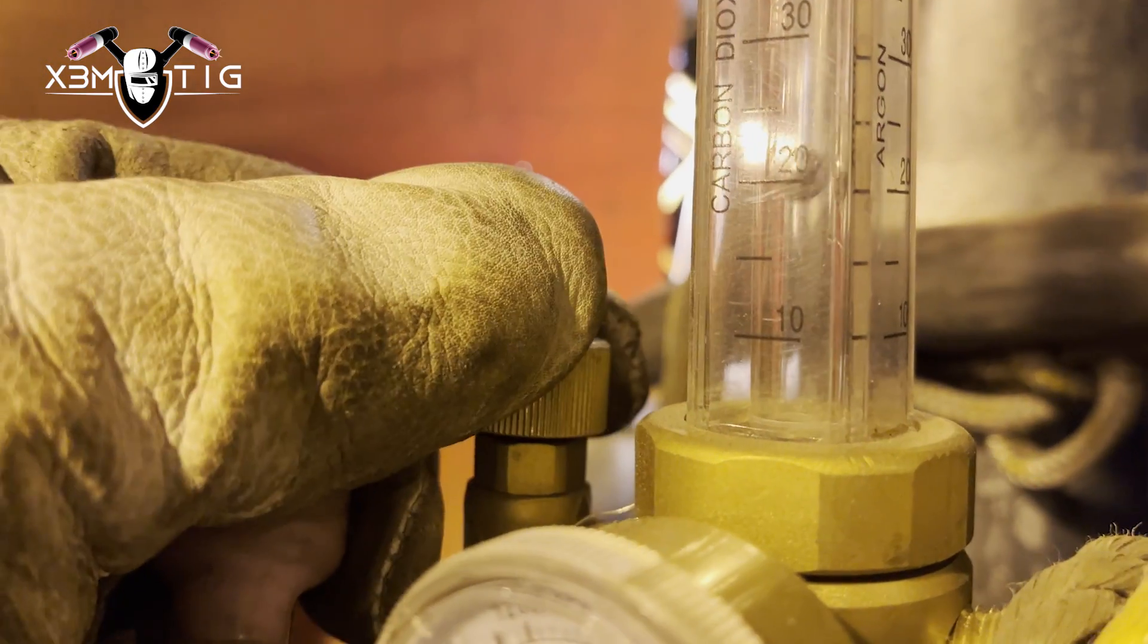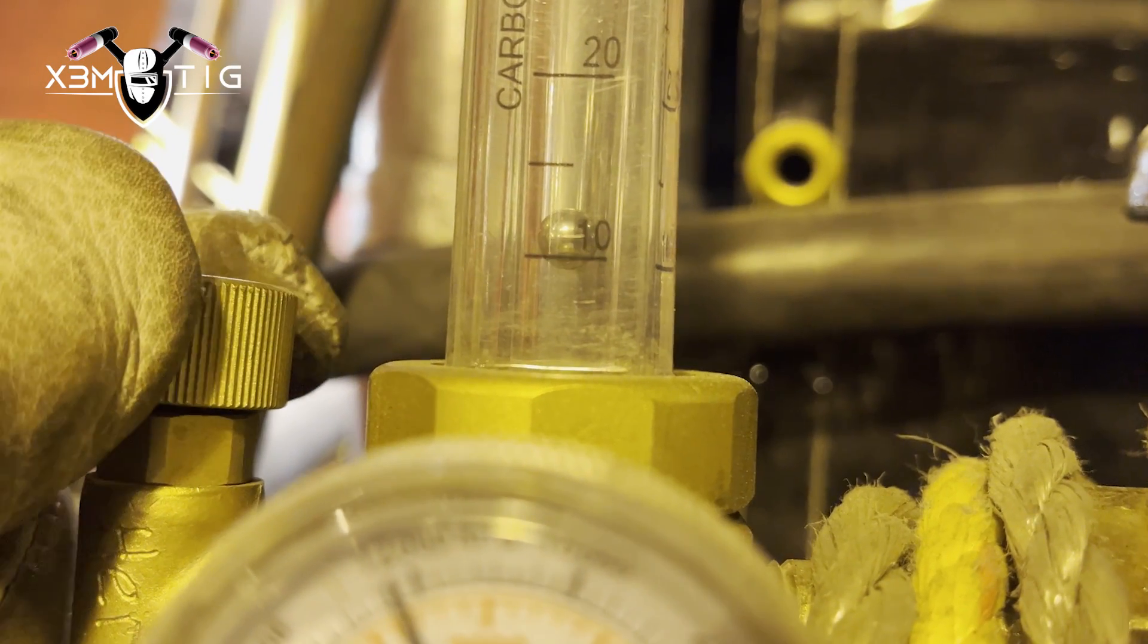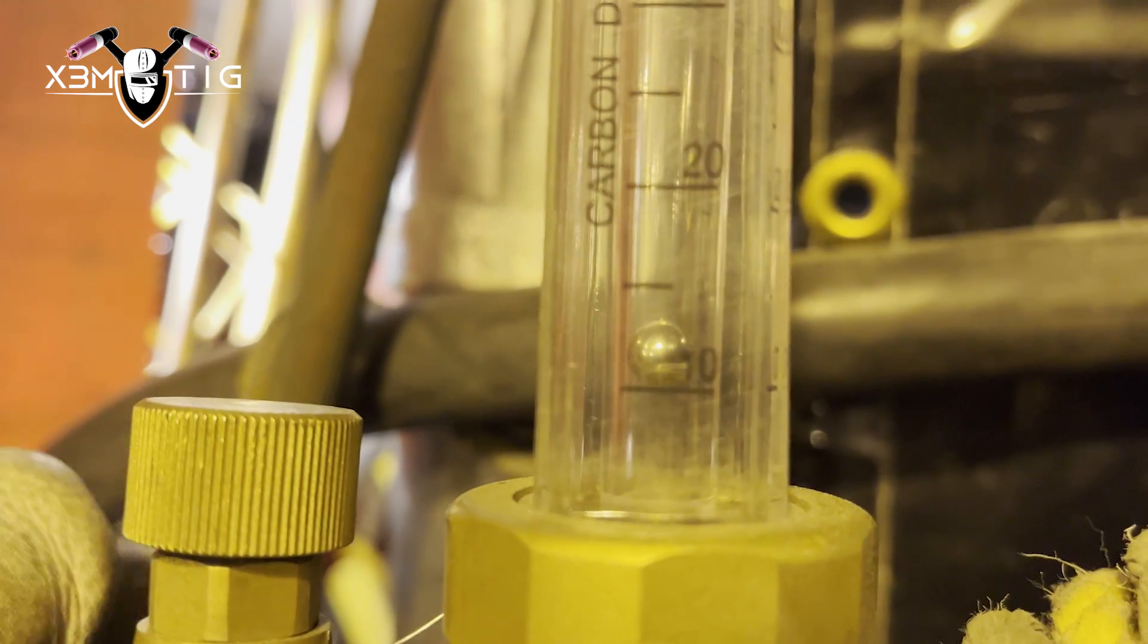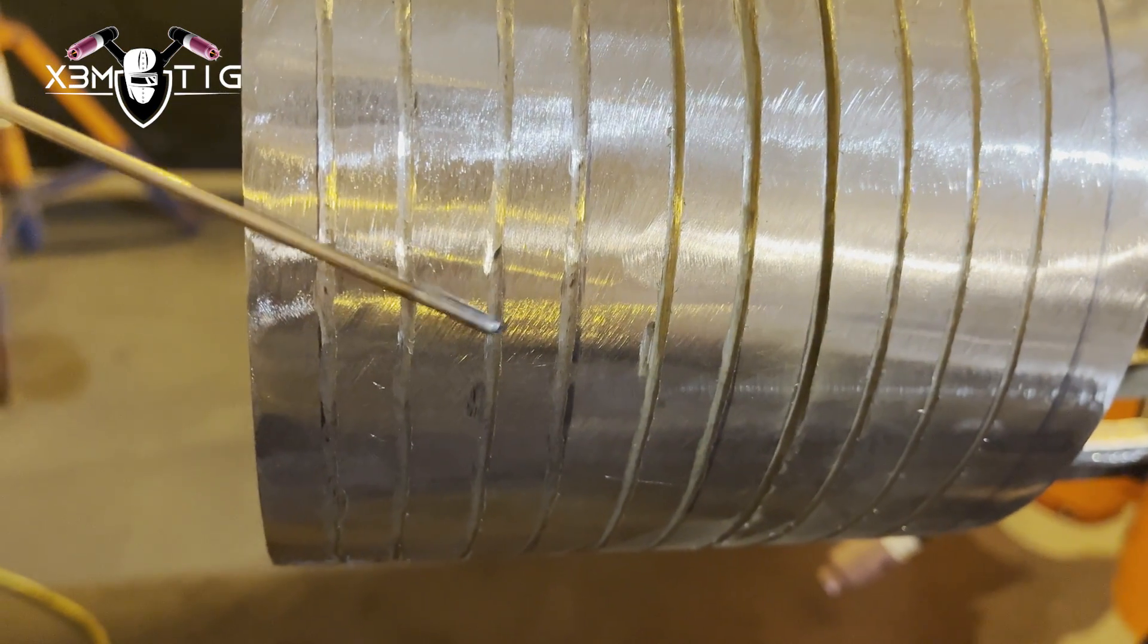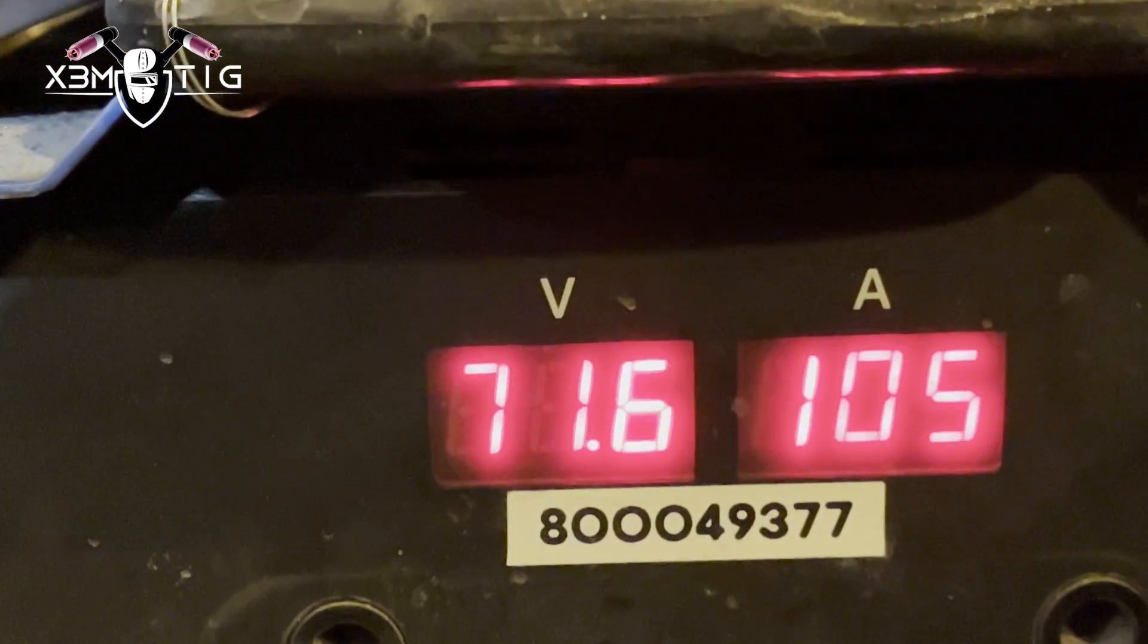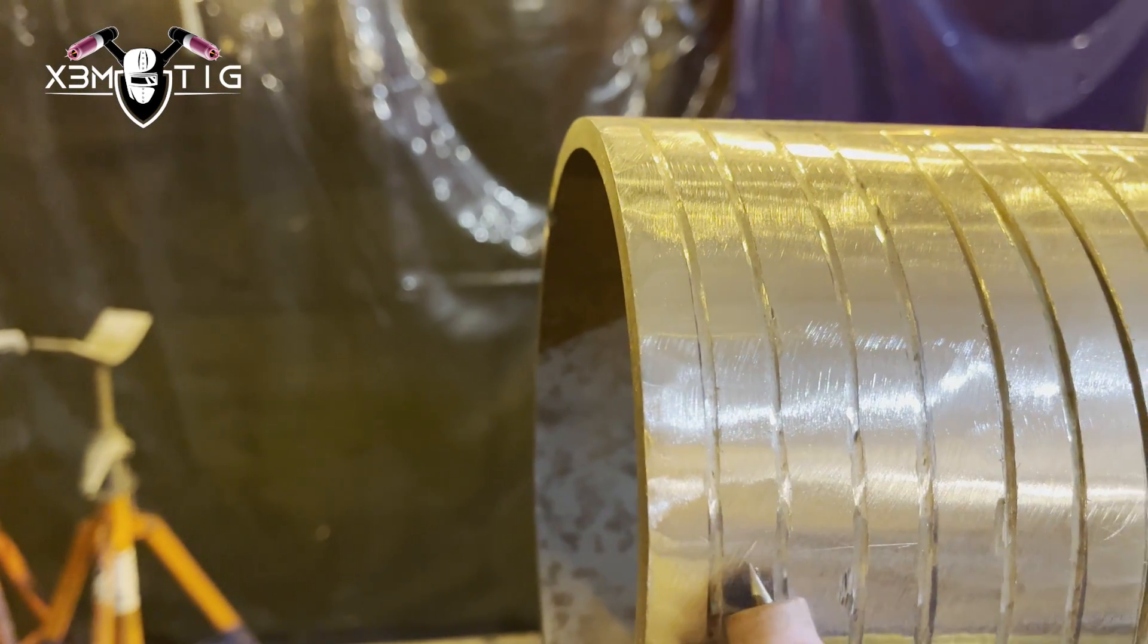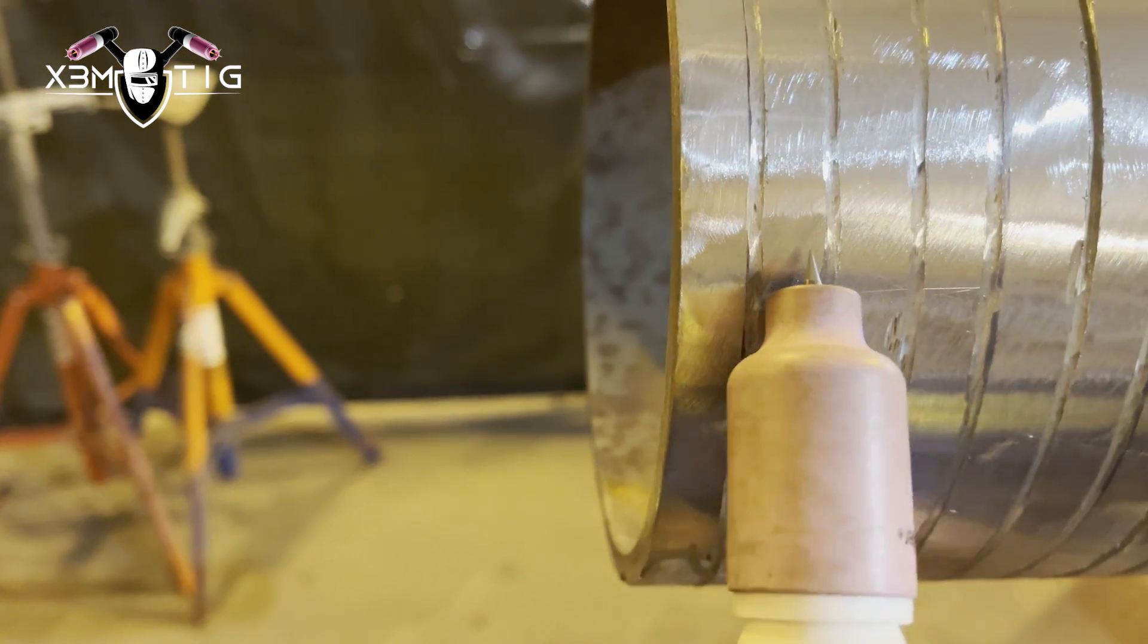Cup size 6: the ideal gas flow for a cup size 6 is 5 to 10 cubic feet per hour. The advantage of using a cup size 6 is it provides a concentrated shielding gas flow which is beneficial for precise and detailed welding.